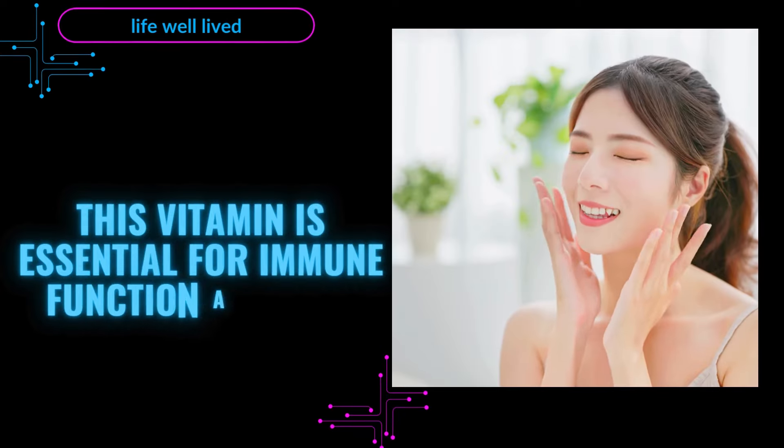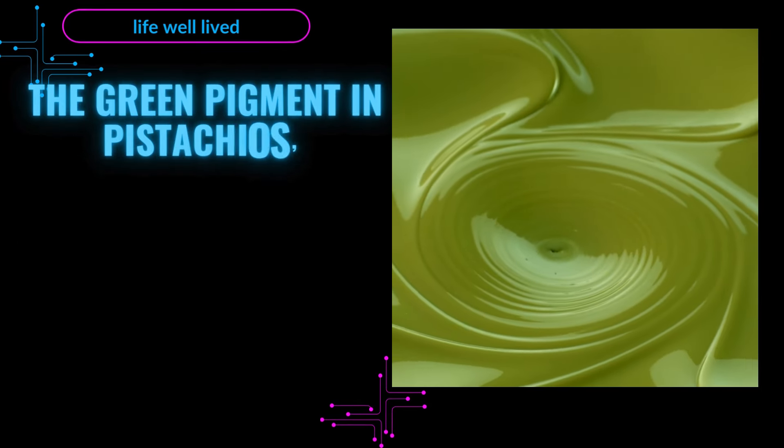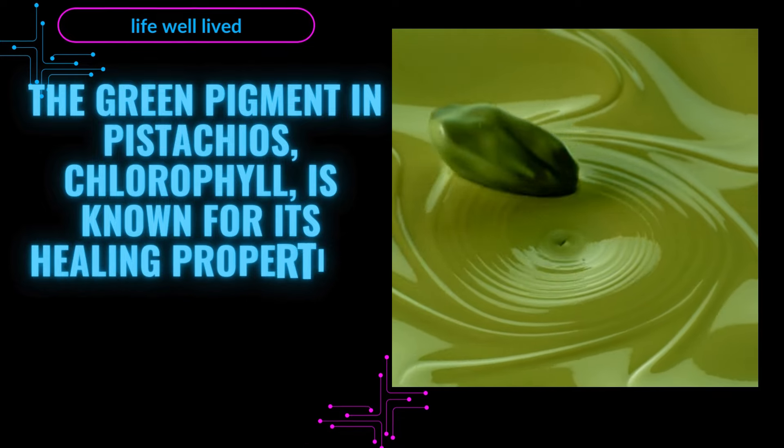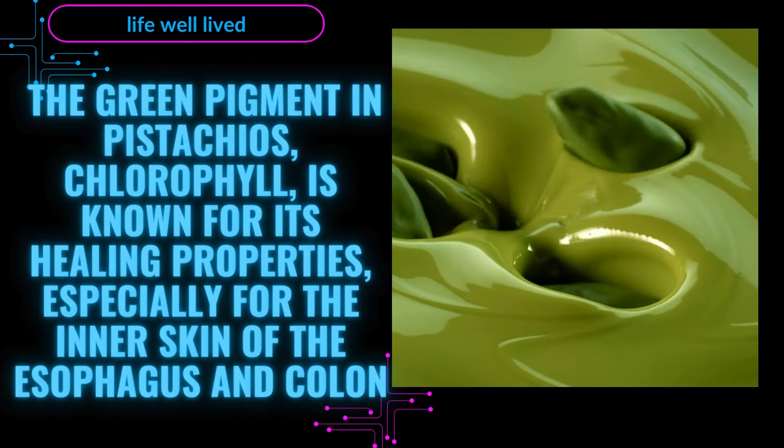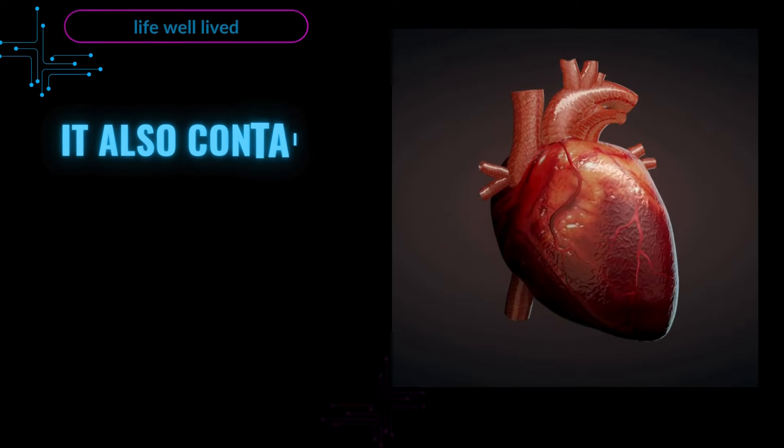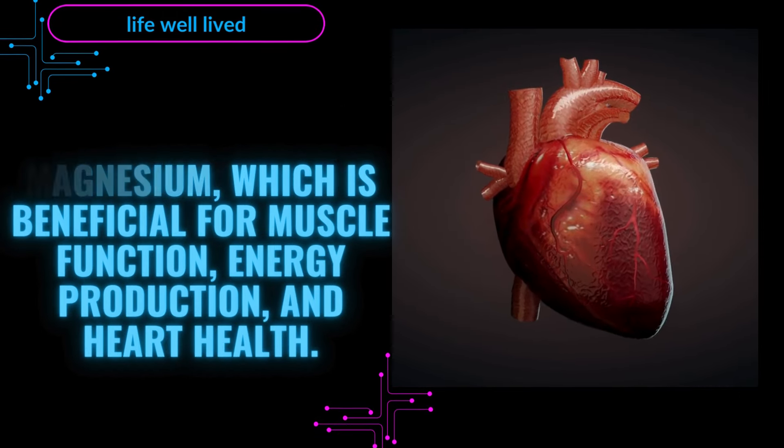The green pigment in pistachios, chlorophyll, is known for its healing properties, especially for the inner skin of the esophagus and colon. It also contains magnesium, which is beneficial for muscle function, energy production, and heart health.